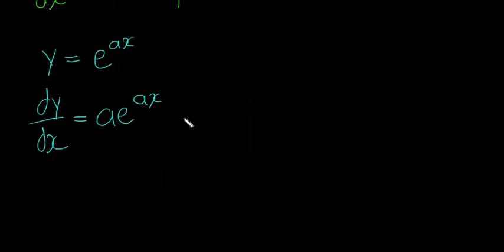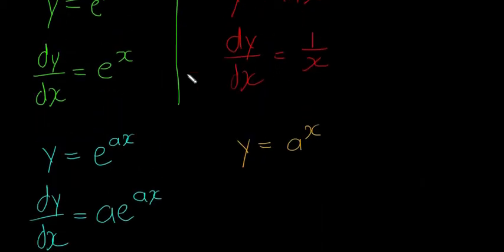And we'll say, this is the last one, and this doesn't come up super often either, but it's still good to know. y is equal to a to the x, so now a is a number. So just take note how this is different from e to the x.